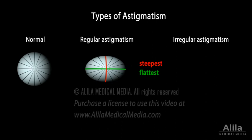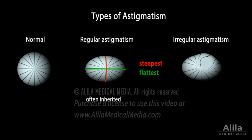Regular astigmatism is typically present from birth and may be inherited. Irregular astigmatism is when the principal meridians are not perpendicular, or the surface of the cornea or lens is irregular or bumpy. This type is most commonly caused by injuries, scarring, conditions such as keratoconus, or previous eye surgery. The most common type is corneal regular astigmatism, and it is also the easiest to treat.